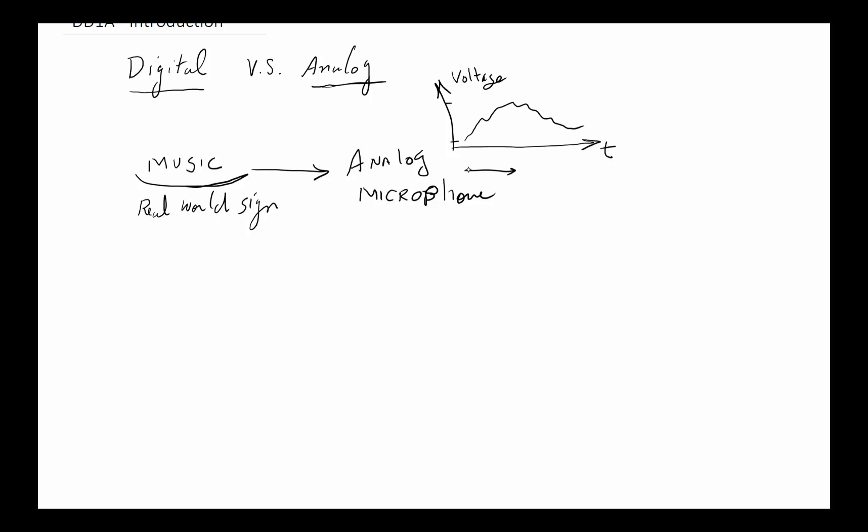In times gone by, we usually would put that into a speaker and the speaker responds to the voltage and sound would come out and we'd hear music. Now for the past 50 years or so, we've learned that we can actually convert this. We can run it to something we're going to call an A2D converter. We're going to take the analog and convert it to digital.